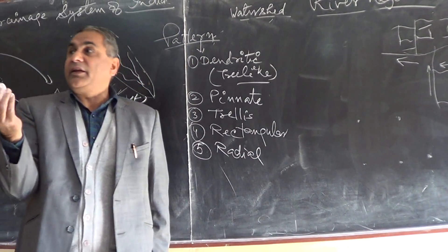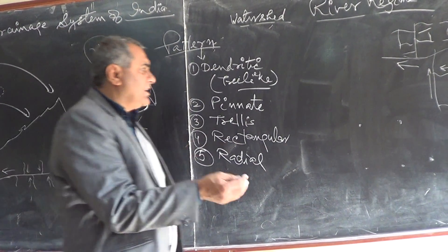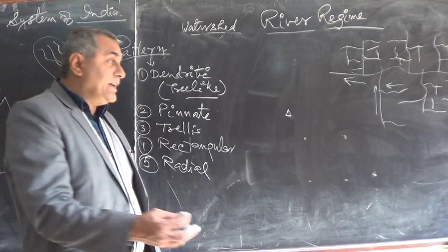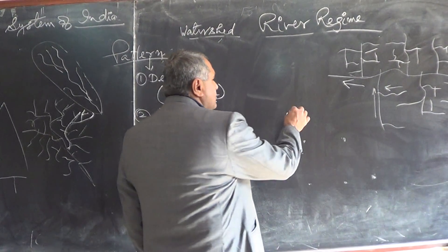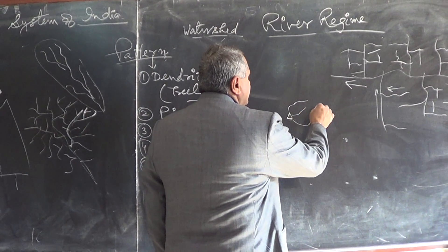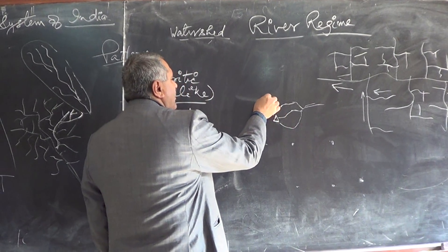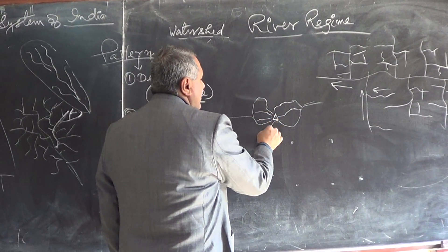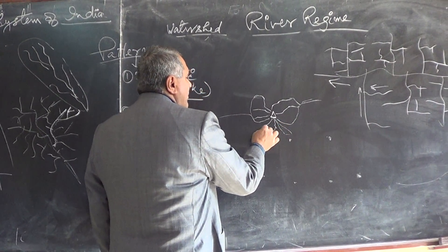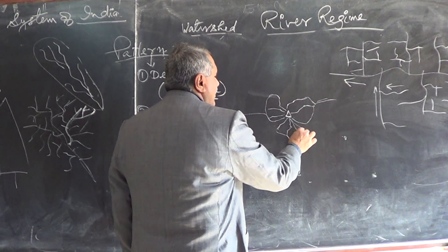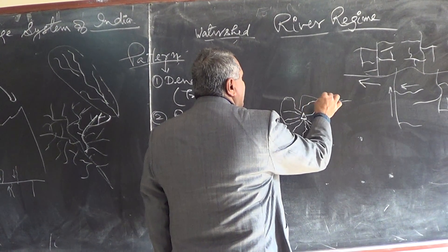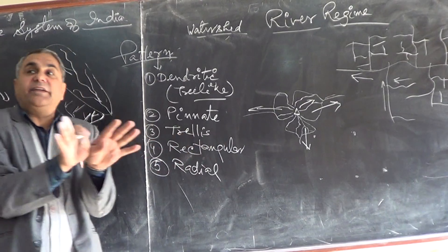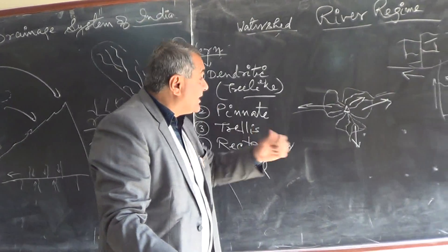Radial drainage means water radiates outward from a central high point. For example, at Amarkantak, water radiates out in all directions — flowing out from the center on every side. This is called the radial drainage pattern.